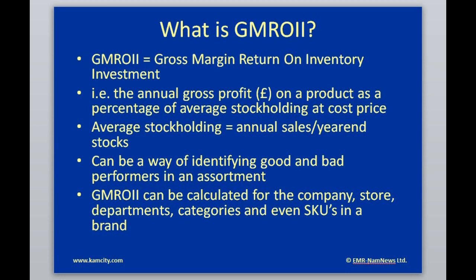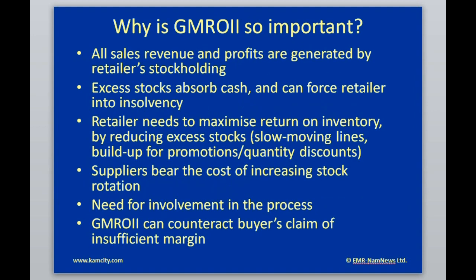GIMROI can be a good way of identifying good and bad products or performers in an assortment and taking appropriate remedial action. It can be calculated for the entire company — i.e., the retailer — any branch within that retail organization, departments within the store, categories within departments, and even SKUs within a brand. This is particularly important because all sales revenue and profits are generated by the retailer's stock holding, one of their three key assets — the others obviously being shoppers and space.